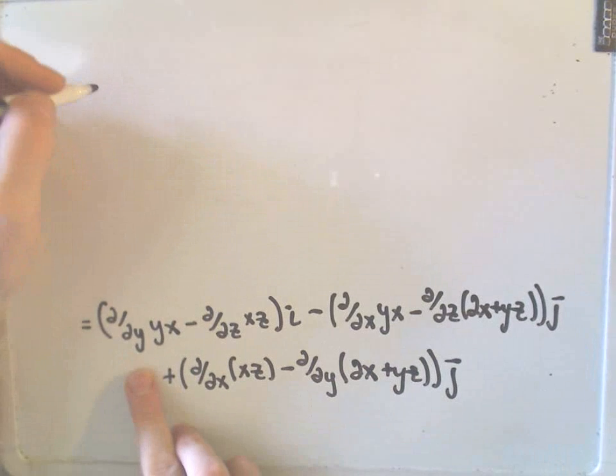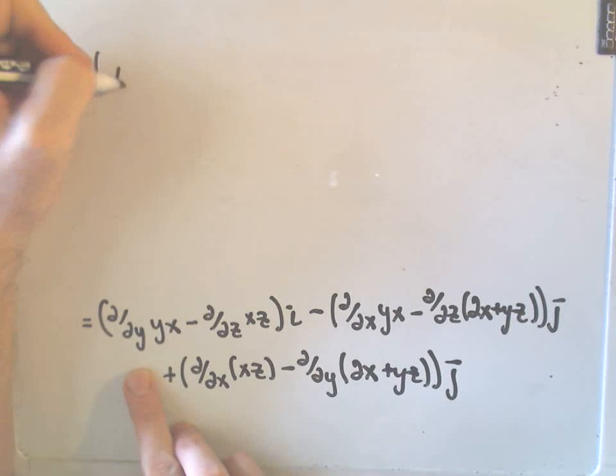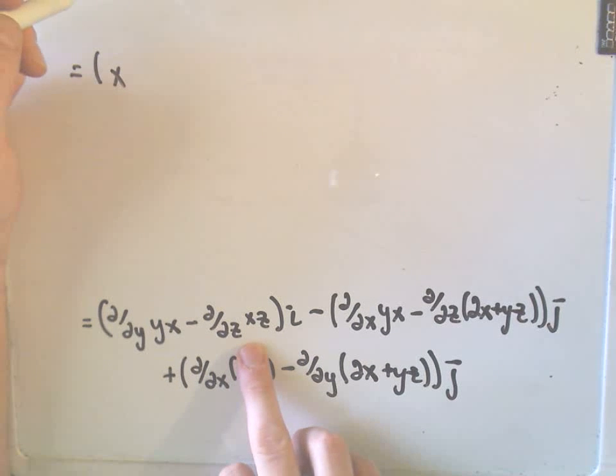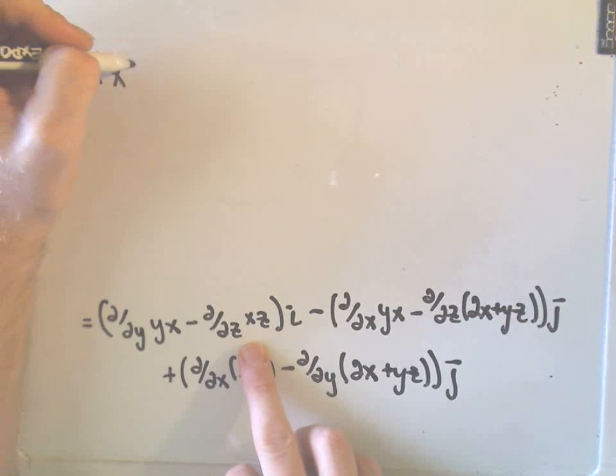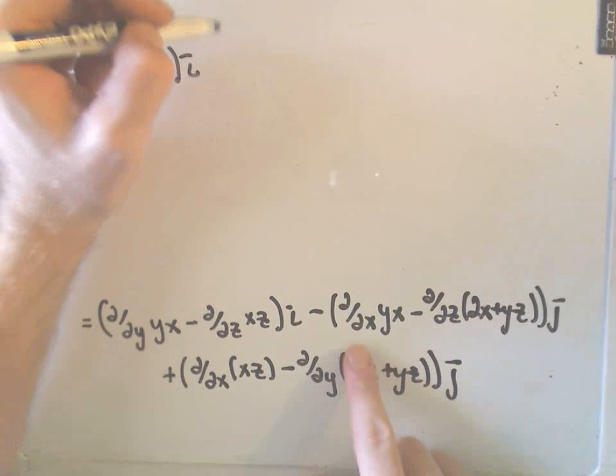So, if we take the partial with respect to y of yx, that'll simply leave us with x. Then, if we take the partial with respect to z of the xz, we'll again just get minus x. Then our i.